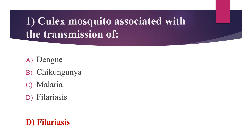Let's see the rest of the options. Option A, Dengue, is transmitted by Aedes aegypti. Chikungunya is also transmitted by Aedes aegypti and Aedes albopictus. Option C, Malaria, is transmitted by the female Anopheles mosquito. And Filariasis is transmitted by Culex.